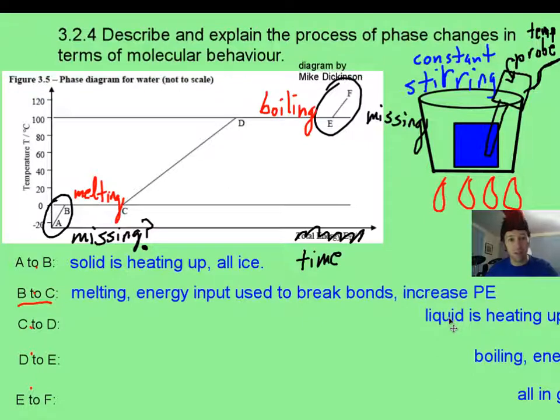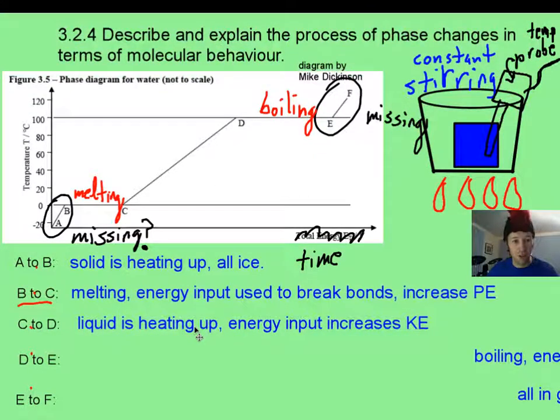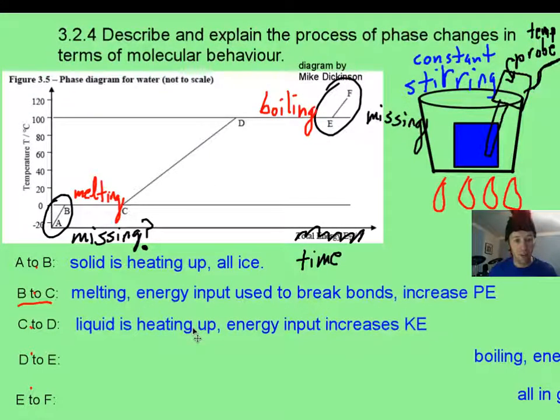Then at C to D, which is going to be up around in here, that is when it's all at a liquid phase. You shouldn't get much temperature rise until it's all been liquefied. Then the extra energy is not breaking bonds, now the extra energy is making all those water droplets slurm around faster with a larger kinetic energy.